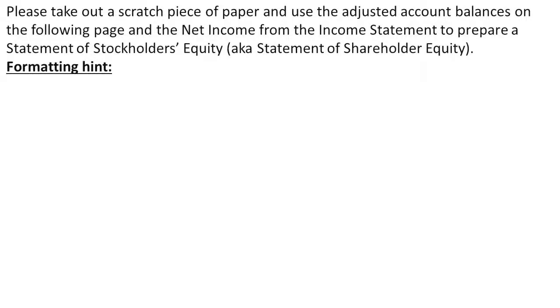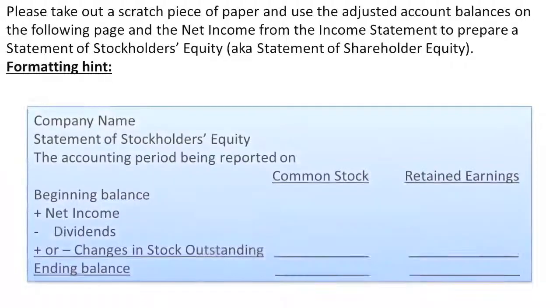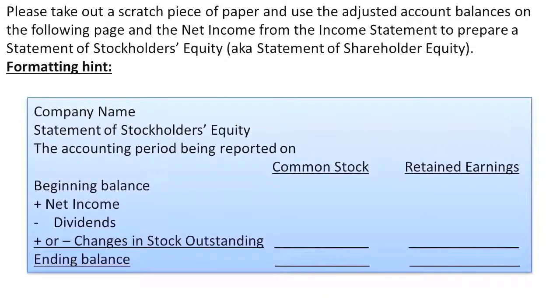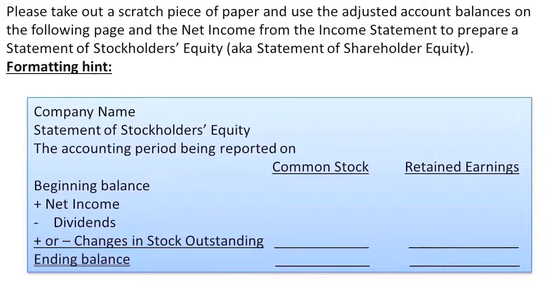Here's a formatting hint. Label it with the company name, specify that it's the Statement of Stockholders' Equity and also specify the accounting period. Once again this will be from March 1st X1 to December 31st X1 because we just barely started the company on March 1st.